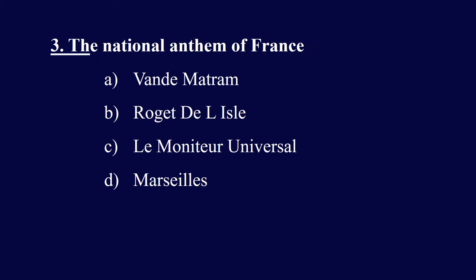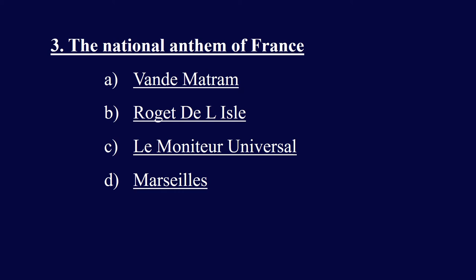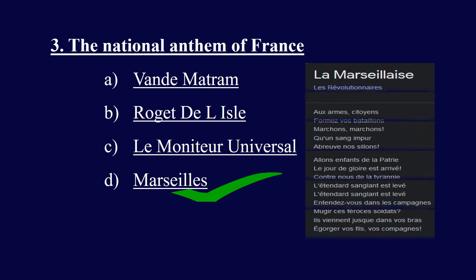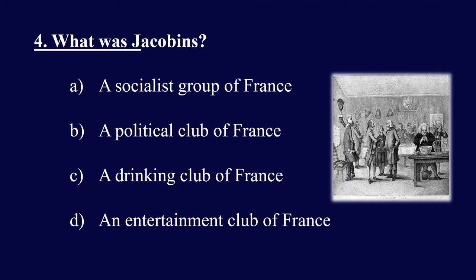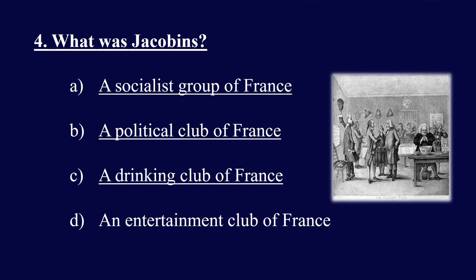Question three: What is the national anthem of France? Options: A) La Marseillaise (one day mantra), B) Roger de Lisle, C) Love Monitor Universal, D) Marseille. The right answer is D, Marseille — the national anthem of France is the Marseillaise. Question four: What were the Jacobins? Options: A) a socialist group of France, B) a political club of France, C) a drinking club of France, D) a club of France. The right answer is B, a political club of France. The Jacobins were a political club in France started during the French Revolution.